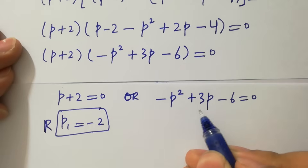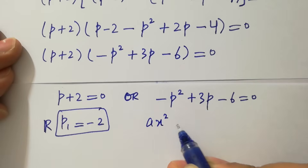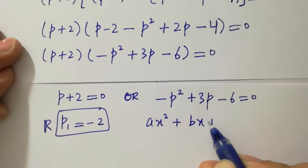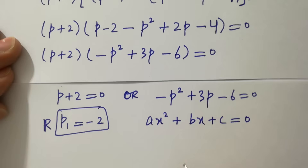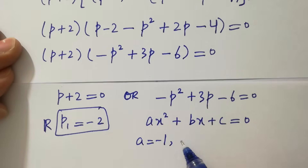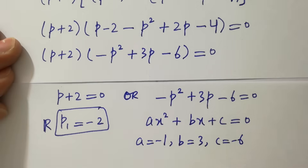The second factor gives a quadratic equation: minus p squared plus 3p minus 6 equals zero. Comparing with ax squared plus bx plus c equals zero, we identify a equals minus 1, b equals 3, and c equals minus 6. This can be solved using the quadratic method.